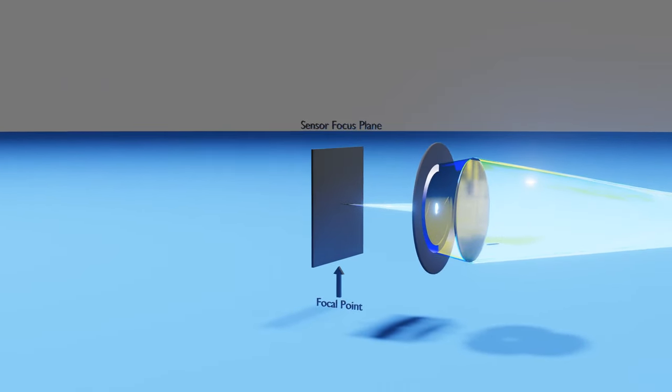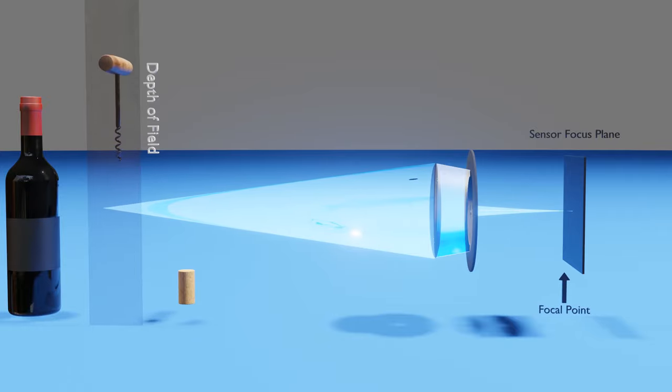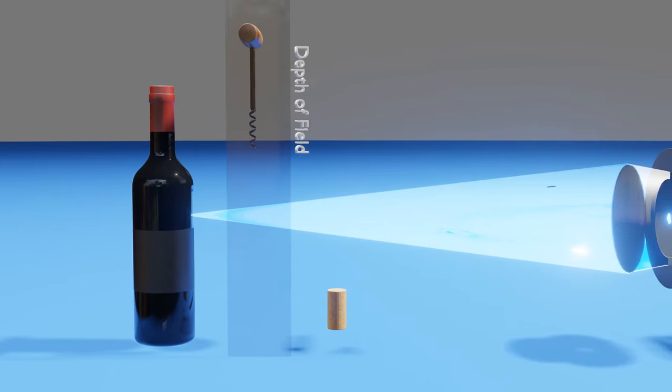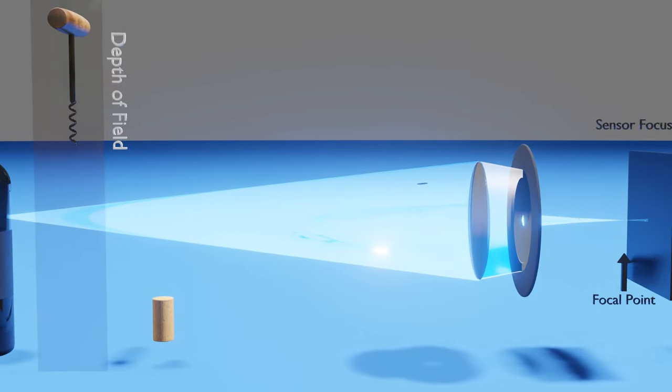Let's now take a point source from the bottle that was not in focus with the wide open aperture. Again, the light emerges from the point source and hits the aperture. The aperture blocks most of the light except for the very center.